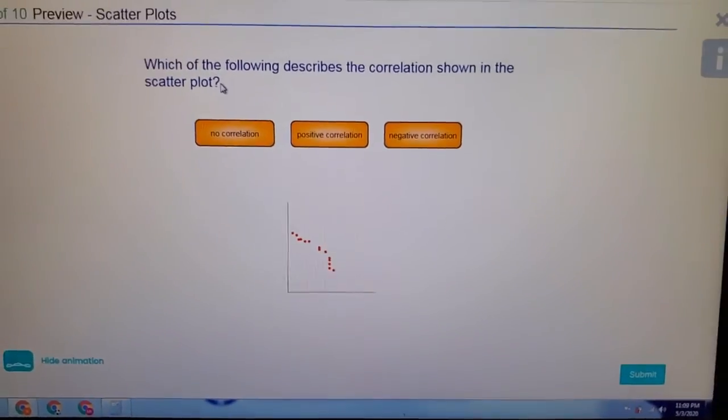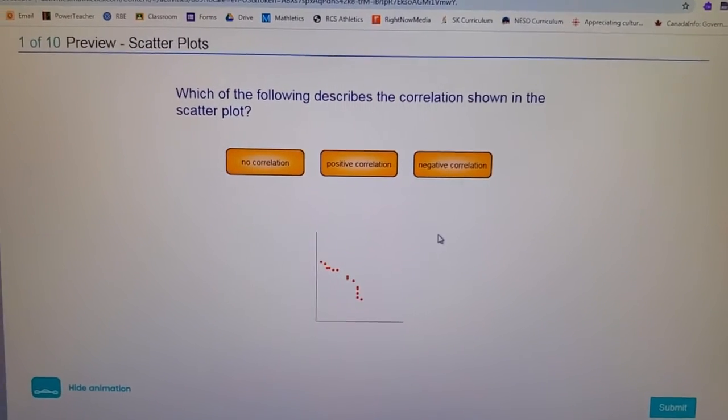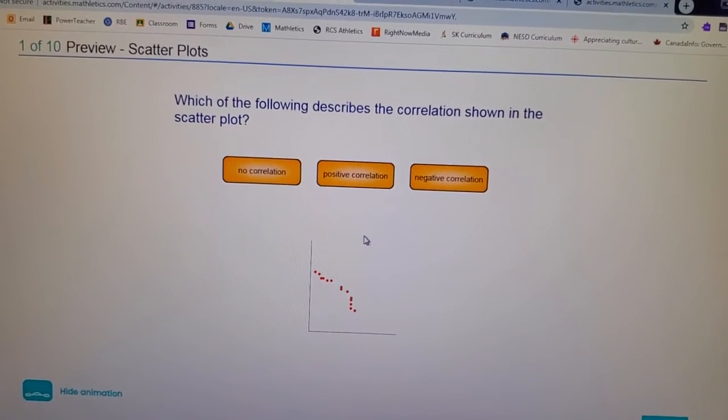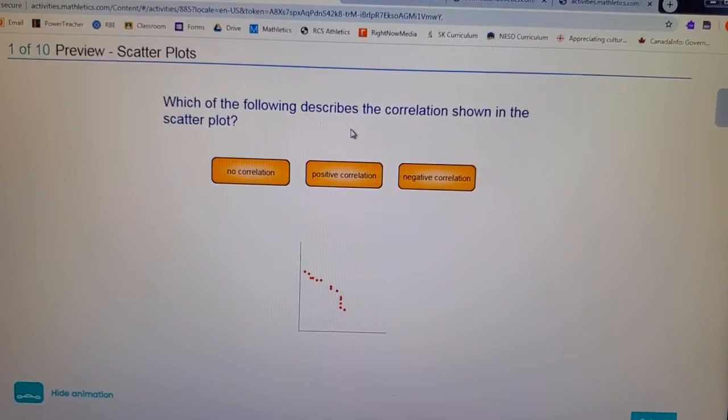This is the 16th activity of probability on grade 7 Mathletics. It's called scatter plots. The question asks which of the following describes the correlation shown in the scatter plot.